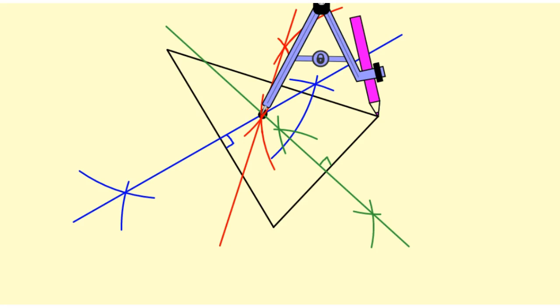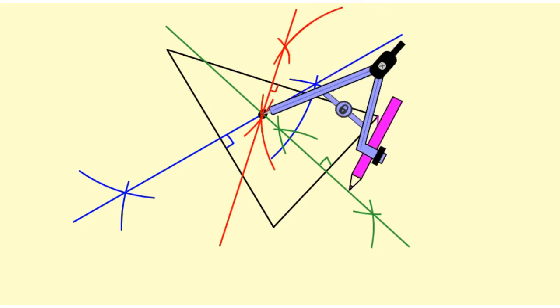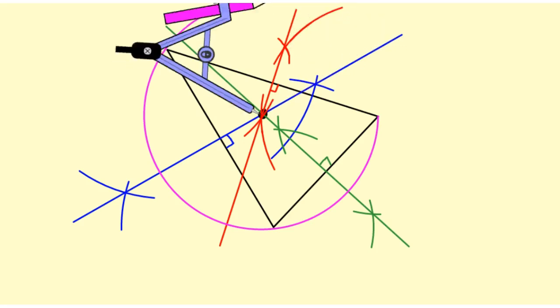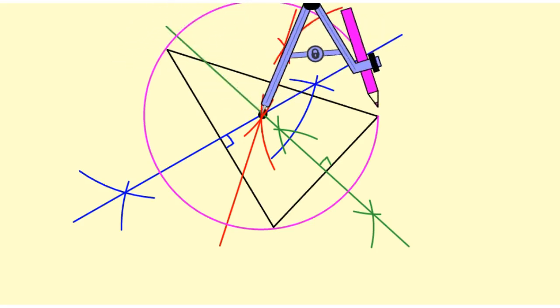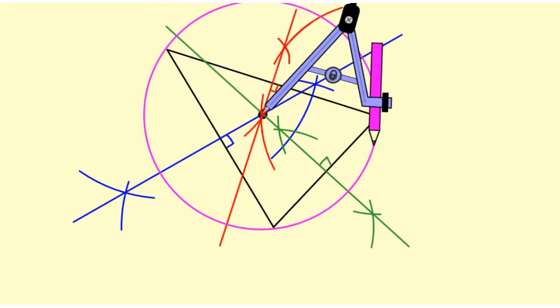So if I put the compass point on the circumcenter, I can circumscribe a circle around the triangle.